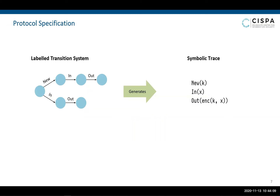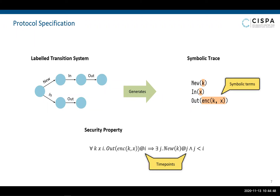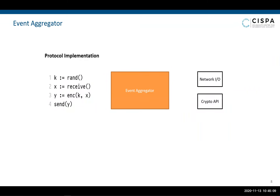Common protocol specifications are usually defined using process calculi or multiset rewriting. These constitute a transition system in which the transitions are labeled with the events that model the protocol receiving and sending messages over the network. A sequence of events generated by such a system forms a symbolic trace that captures the execution of the protocol. Events in such a trace contain symbolic terms which are used to abstract different cryptographic operations like encrypting and signing. For example, the trace shown here indicates that first, the random value k is generated, the value x is received from the network, and then the encryption of x under k is sent back. Security properties of protocol designs are typically stated and proved with respect to these traces, for example by using temporal first order logic. The property shown here ensures that whenever an encryption of x under key k is sent out, the key k was previously generated randomly.